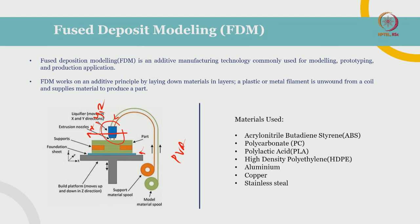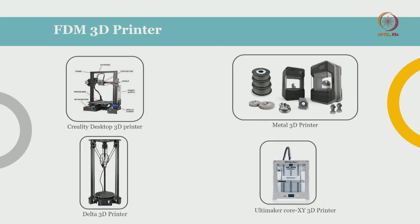Coming to the materials used in FDM printing, the most common ones are ABS and PLA. PLA is used very regularly because of its low melting point and it can be used in almost every 3D printer, producing really high surface finishes. There are also high-end printers which can support metals like aluminium, copper, and stainless steel.